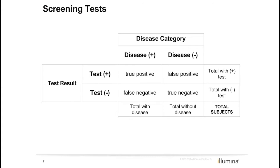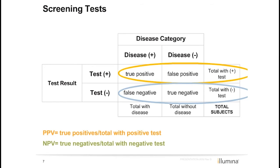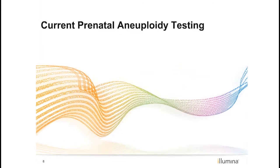Looking at the same 2x2 table but following the rows across allows us to calculate PPV and NPV. PPV is the number of true positives over the total number of patients with a positive result. NPV is the number of true negatives over the total number of patients with a negative result.